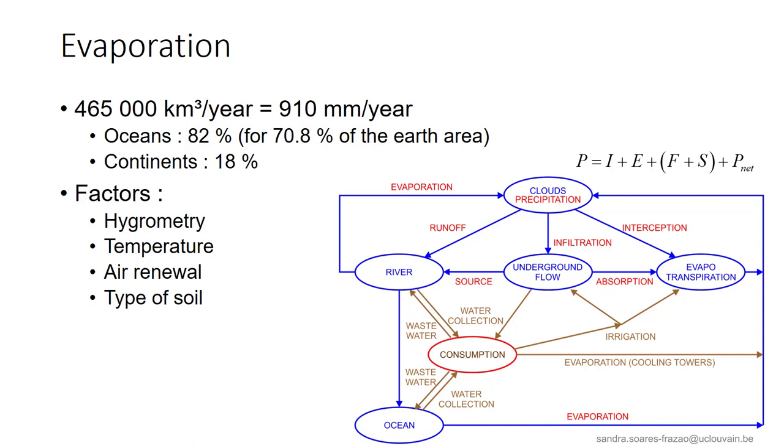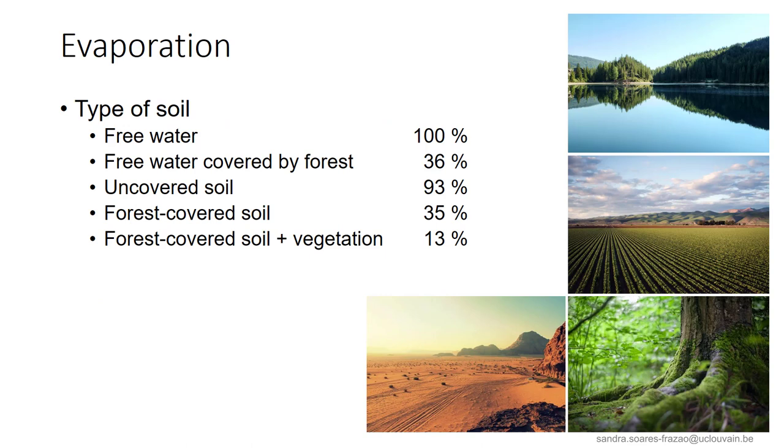And finally, the type of soil, or the soil coverage, is a key factor. We can see here that if we take as a reference the potential evaporation for free water, like in lakes or dam reservoirs, it is less for other soil coverages. For example, if the water is covered by a forest, this reduces significantly the evaporation potential. But then, uncovered soil again has a very high evaporation potential, that decreases again with vegetation and forest coverage.